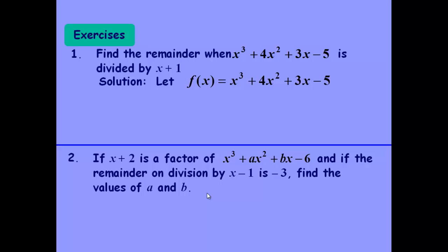OK, well, the answer to the first one, then, we set it up as f of x. We put minus 1 in if x plus 1 is what we're dividing into the cubic. And we get a remainder of minus 5.